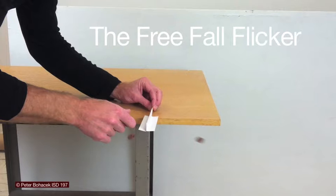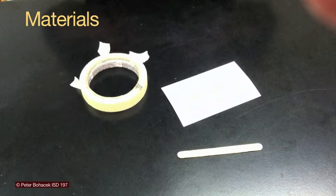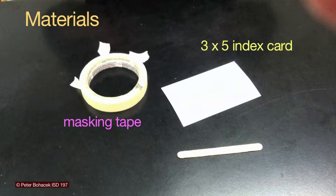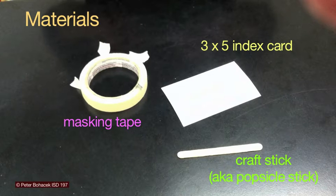Here's how to make one. Supplies you'll need are masking tape, a 3x5 index card, and a craft stick or popsicle stick.